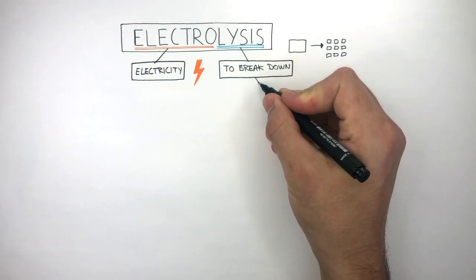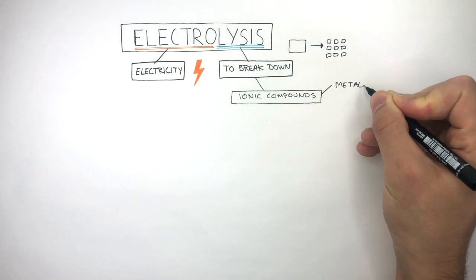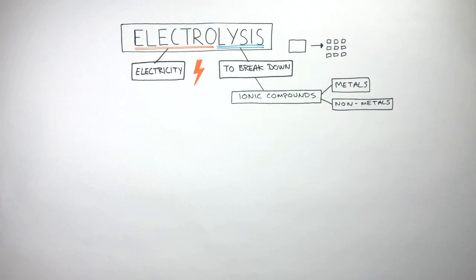Electrolysis is normally used to break down ionic compounds into the individual metals and non-metals. Electrolysis is very useful. It allows us to extract metals and non-metals from their ionic compounds.